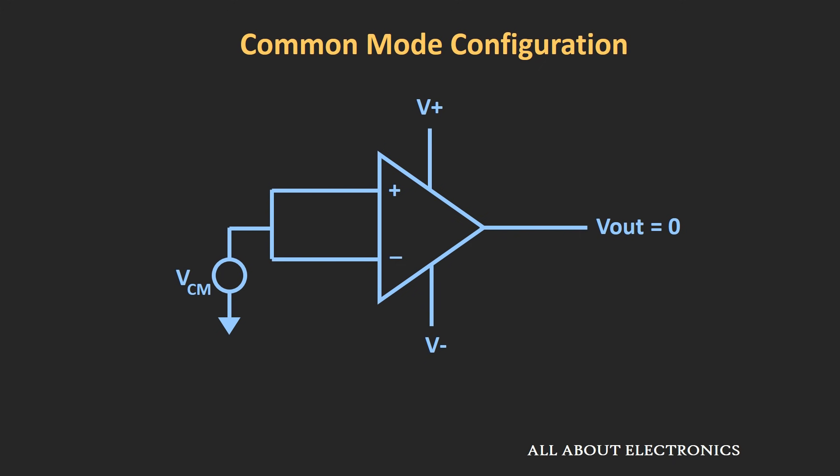The input voltage which is applied to both input terminals is known as the common mode voltage. In ideal conditions, in this configuration, the output of the op-amp should be 0. But actually, some voltage will be available at the output, and this output is known as the common mode output voltage. Usually this output voltage is less than the applied input signal — the ratio of output divided by input is always less than 1. This ratio or gain is commonly known as the common mode gain of the op-amp.